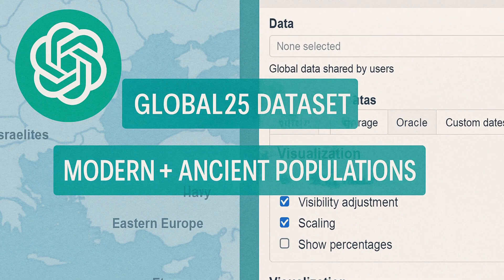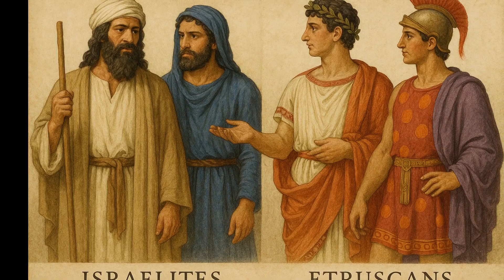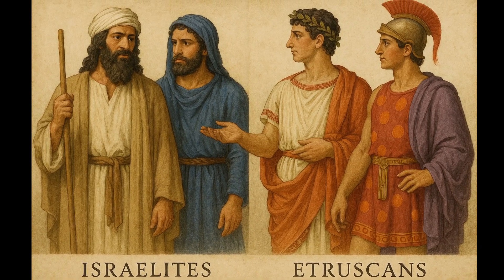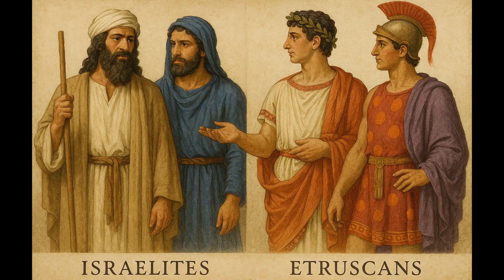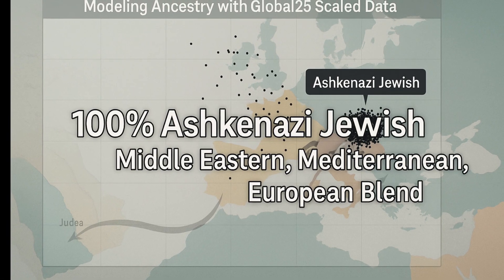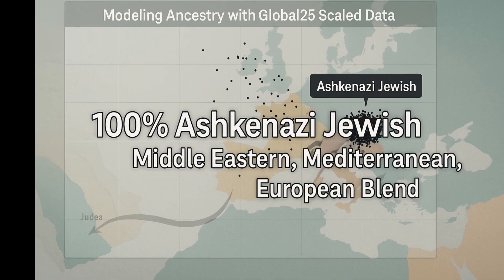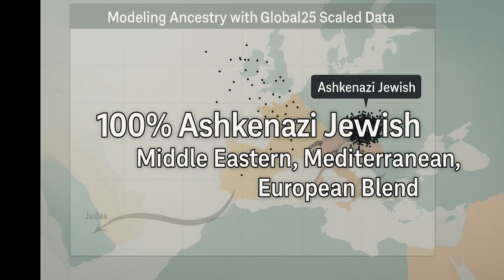I built a custom data set that included reference groups from regions like the Southern Levant, Italy, Eastern Europe, and ancient civilizations such as the Israelites and Etruscans. Then I uploaded my own Global25 DNA coordinates into Vahaduo and ran several models to see how my ancestry matched up with these populations. The results gave me a clear, detailed picture of my roots and revealed the genetic signature that defines the Ashkenazi Jewish population.